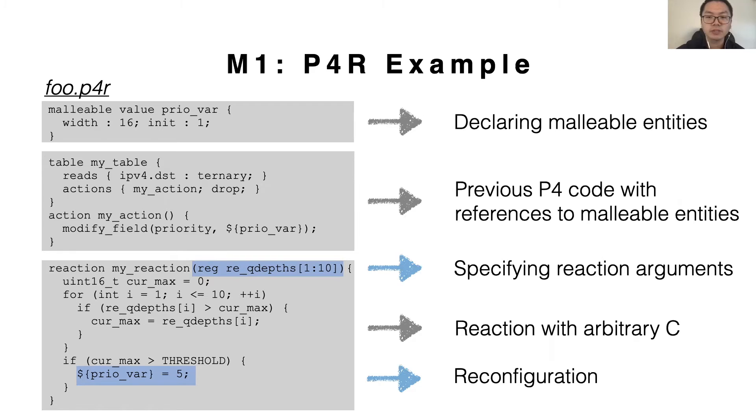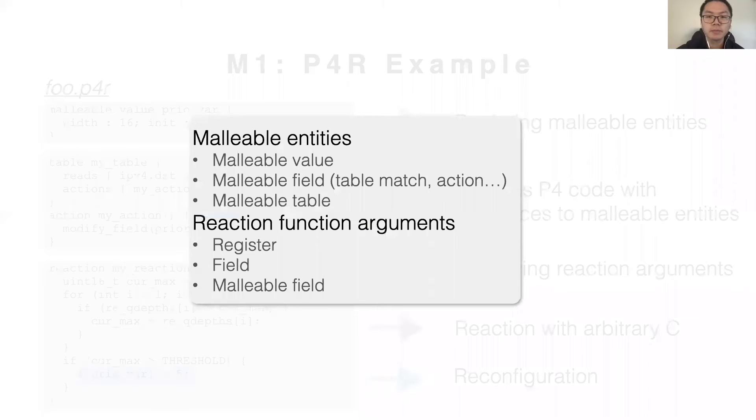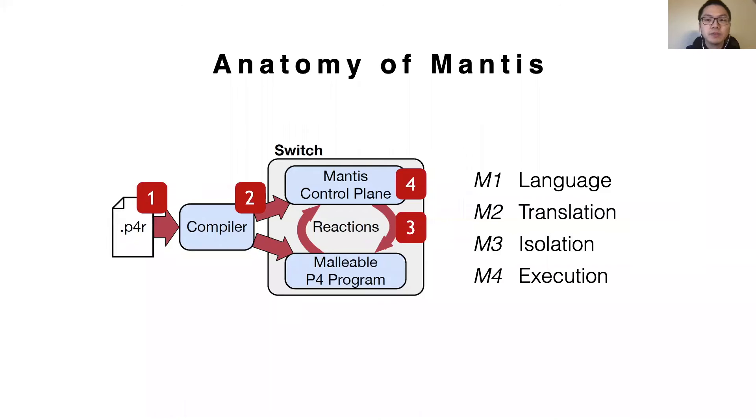The above is just a simple example. It turns out that, besides malleable values which can take on arbitrary numeric values, one could also dynamically reconfigure other P4 objects such as fields and tables. Meanwhile, besides register arguments, one could also specify other data plane objects such as header or metadata fields, malleable fields, and use them as if they were C variables or arrays.